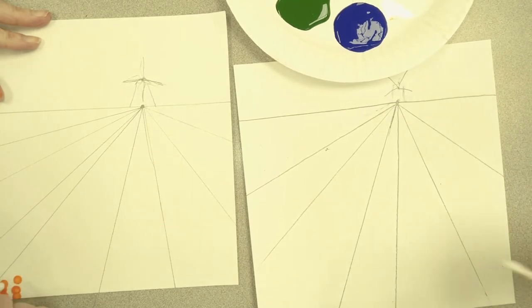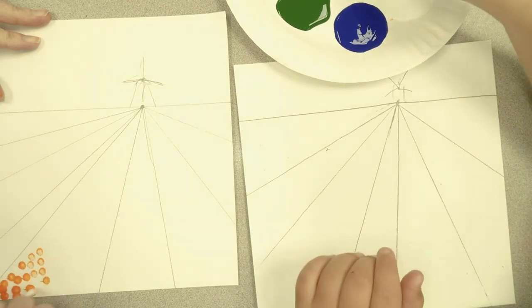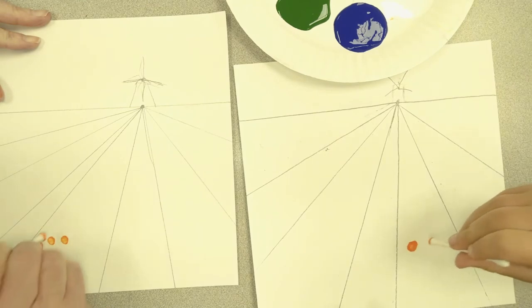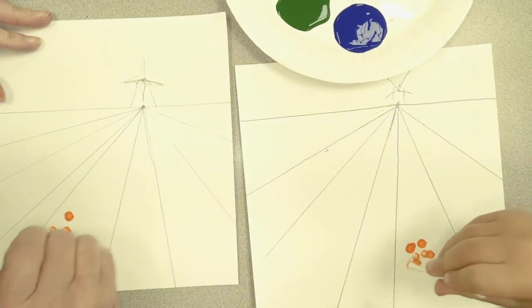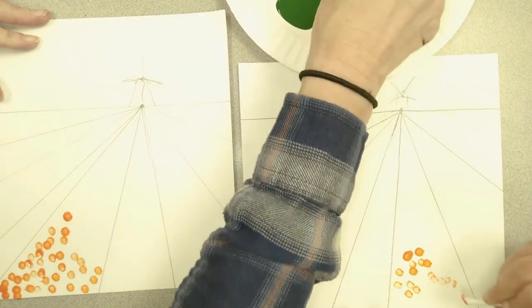So I'm going to make this one orange, and I'm just going to start by making dots straight up and down.